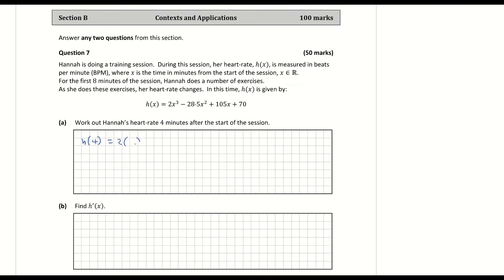Let me just write out the function and write in my value for x. Subbing in 4 for x and evaluating that, I'm getting h of 4, or her heart rate after 4 minutes, which is 162 beats per minute. So nothing too hard there.